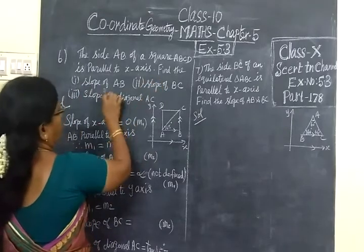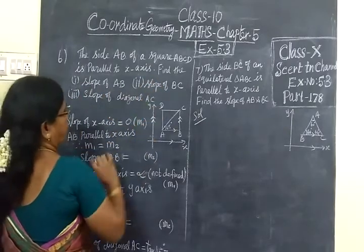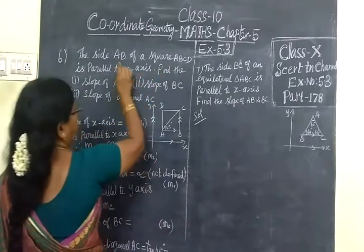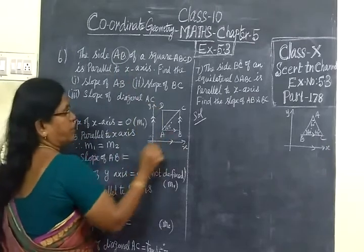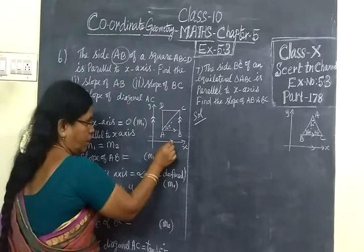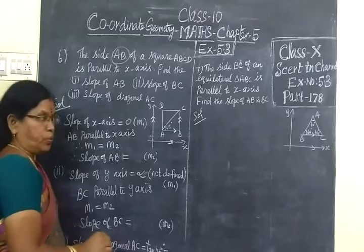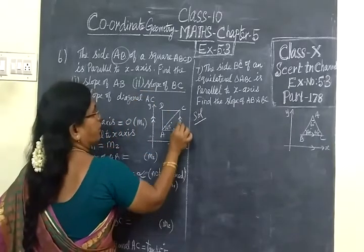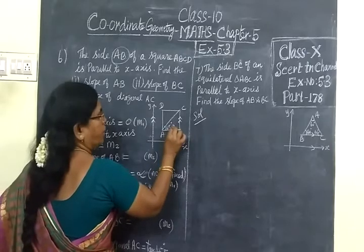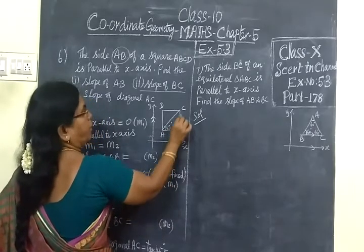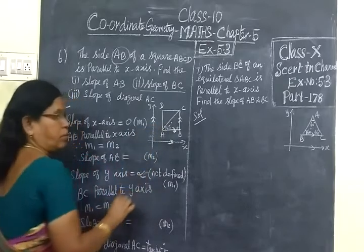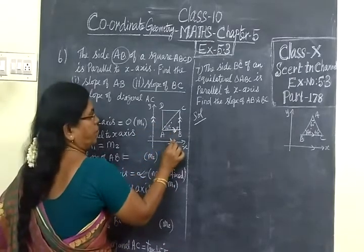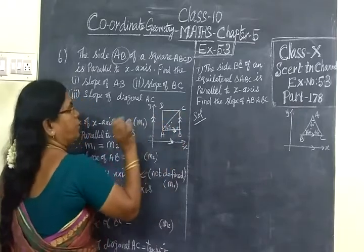Find the slope of AB, slope of BC. AB is parallel to X axis. X axis is parallel to Y axis. Slope of BC. X axis is parallel. It is 90 degrees parallel. So the slope of BC is Y axis parallel. It is obvious. AB is parallel to X axis and BC is parallel to Y axis.